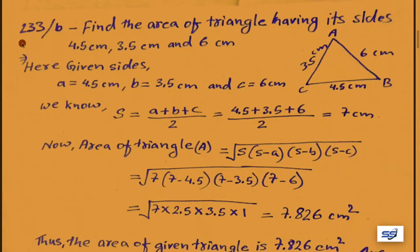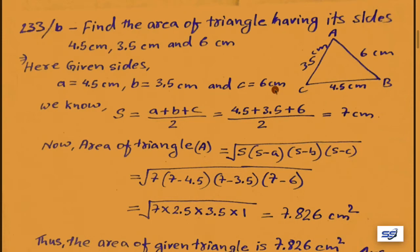Problem 233(b): Find the area of a triangle having sides 4.5 cm, 3.5 cm, and 6 cm. We assume triangle ABC with sides a equal to 4.5 cm, b equal to 3.5 cm, and c equal to 6 cm. By formula, s equals (a plus b plus c) upon 2, which equals (4.5 plus 3.5 plus 6) upon 2, giving s equal to 7 centimeter.